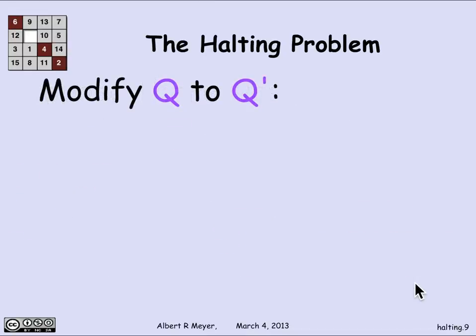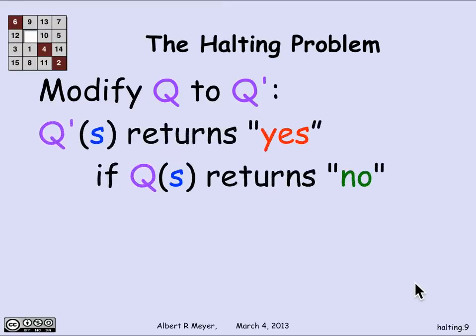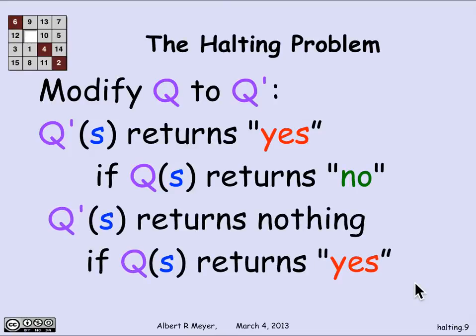Here's the trick: I'm going to modify q to act as though it was complementing the diagonal. More precisely, I'm going to modify q to be another procedure, q prime, which behaves a little bit differently. Q prime of s returns yes when q of s returns no. And q prime of s returns nothing — that is, it doesn't halt — if q of s returns yes. So q prime is like complementing the bits on the diagonal. Precisely: if q of s says no, q prime of s says yes; if q of s says yes and s halts successfully, q prime does not halt successfully — it returns nothing at all.